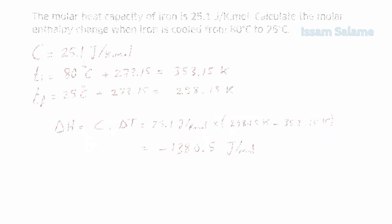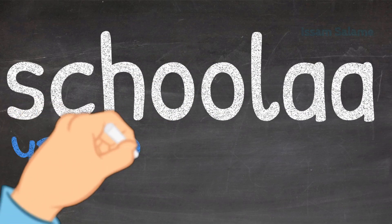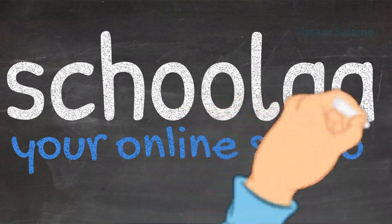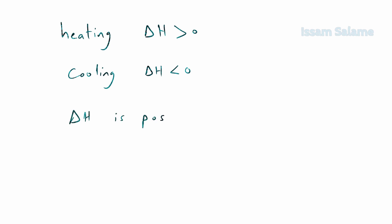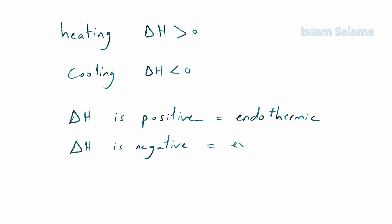To summarize what we learned today: during heating, the molar enthalpy change was positive because it requires energy. During cooling, the molar enthalpy change was negative. From now on, when the change in enthalpy is positive it means the change is endothermic — it requires energy. When the change in enthalpy is negative, it means the change is exothermic — it releases energy.